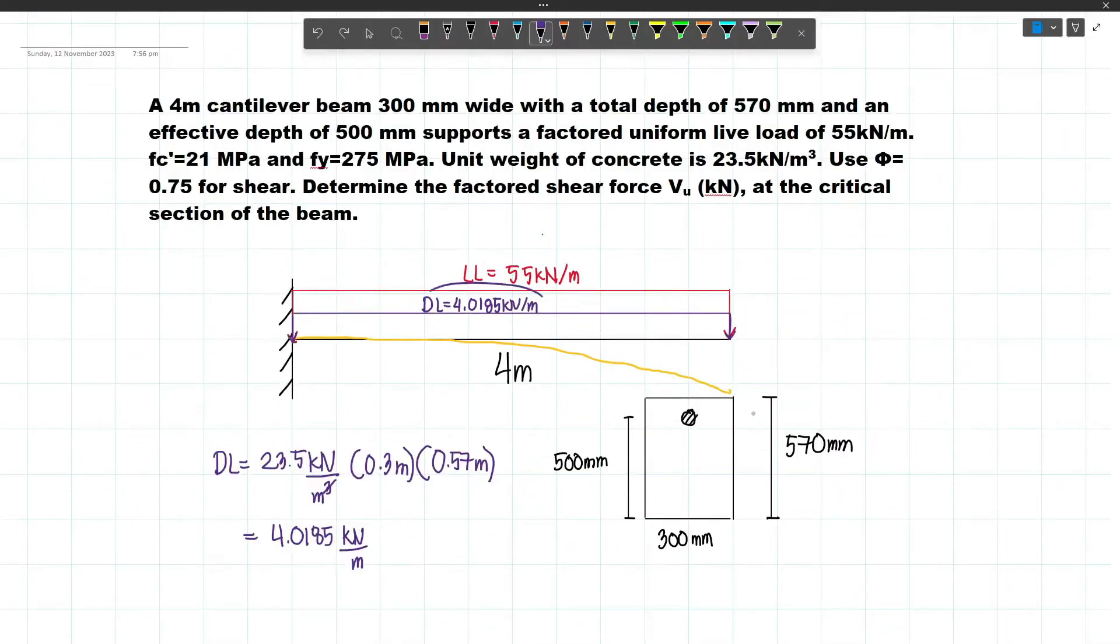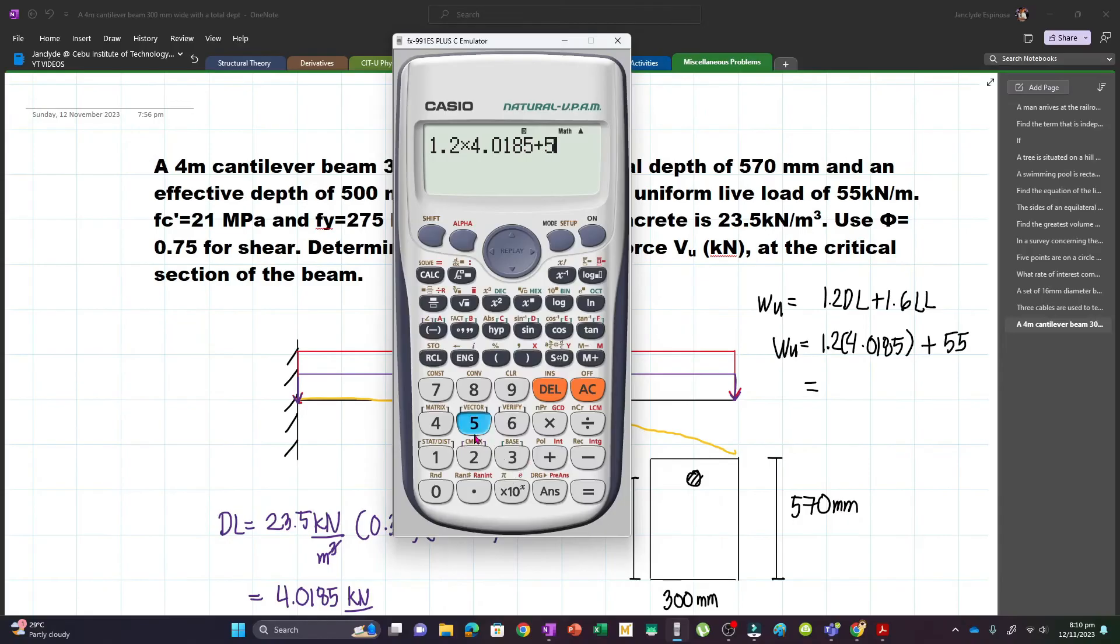However, this is not factored yet. Let's multiply by 1.2 because the ultimate load equals 1.2 DL plus 1.6 LL. We are not multiplying by 1.6 because this is already the factored uniform live load. Our WU will become 1.2 times 4.0185 plus 55, which equals 59.8222.